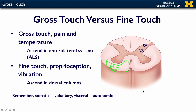Fine touch, proprioception, and vibration sense travel in the dorsal columns. You'll notice a divide: the legs and lower abdomen are represented in one area, while the arms and trunk or chest are represented in another area.